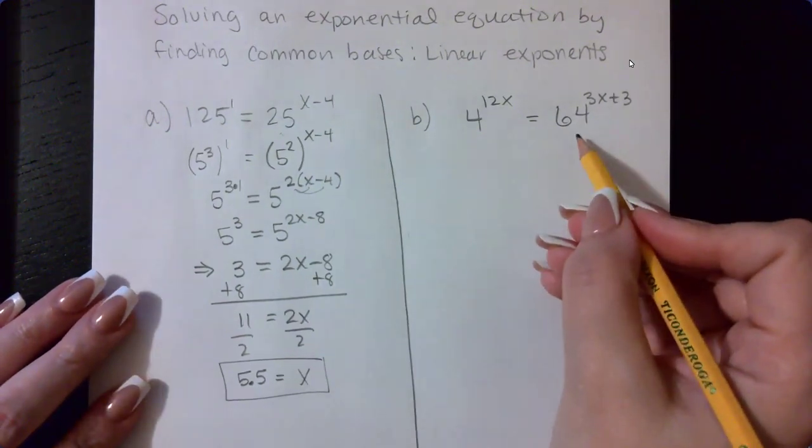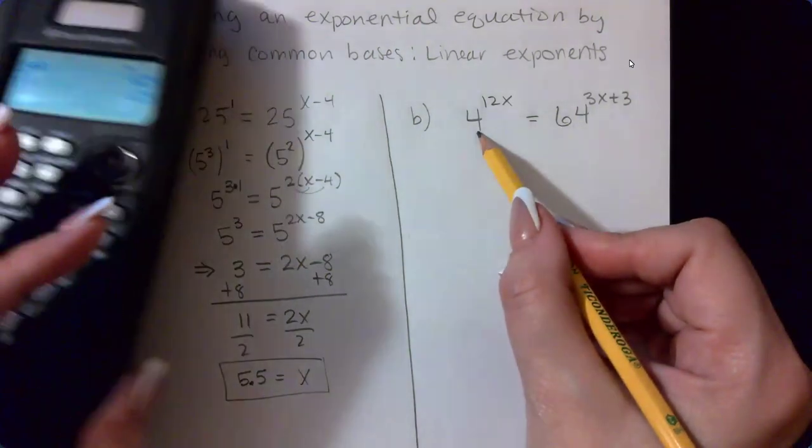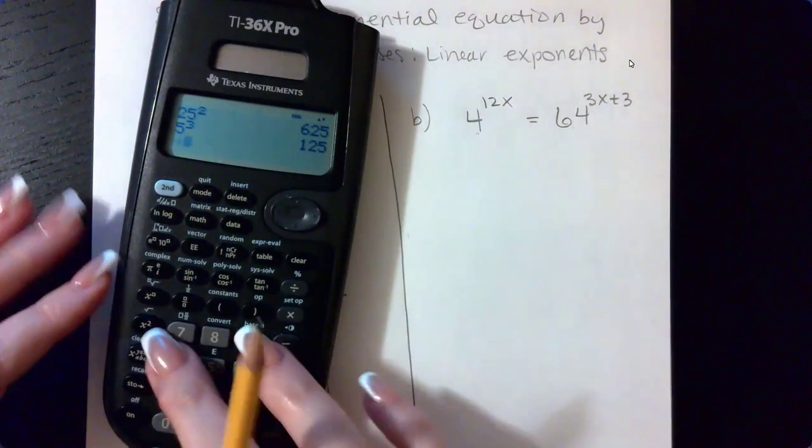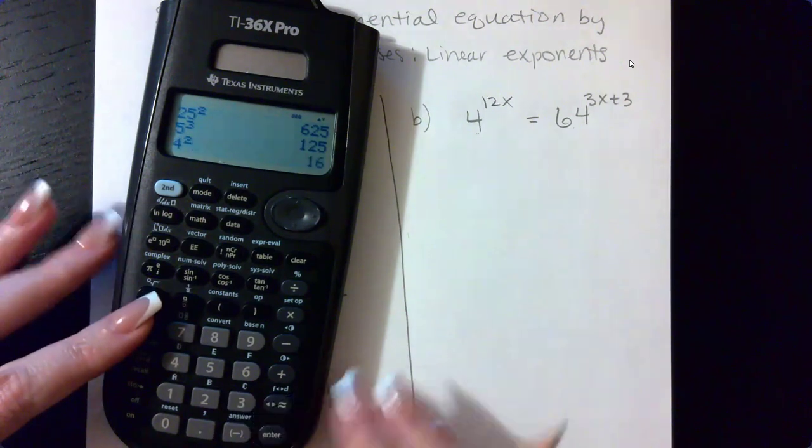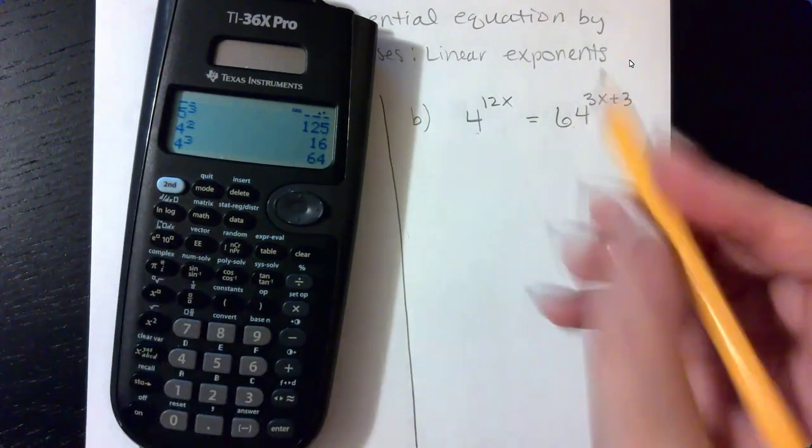Similarly here, you have the two bases, four and 64. You want to try to go with a smaller base. I do believe that we can get 64. Four raised to the third power is 64.